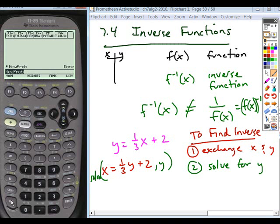But you're solving after you exchange the x and the y. So this one you can do by hand. I'll show you on calculator here and then go through it by hand. But if you just take your equation, x equals 1 third y plus 2. Solve for y.